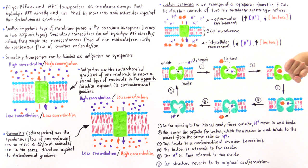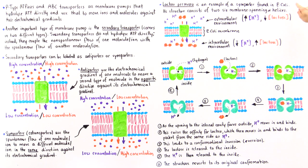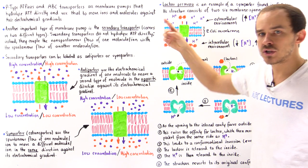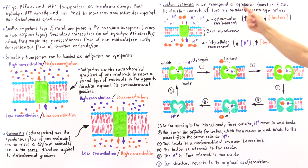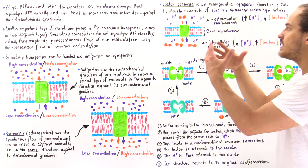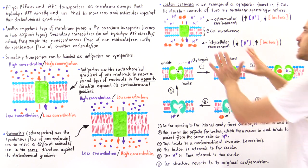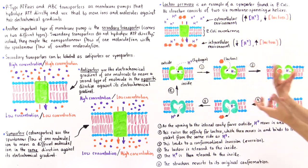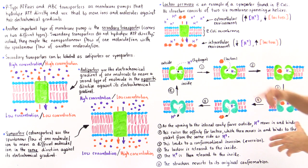Its structure consists of two six-membrane-spanning alpha helix halves combined to form this symporter, for a total of 12 membrane-spanning alpha helices. Let's take a look at the following diagram to see the general idea of what lactose permease actually does.